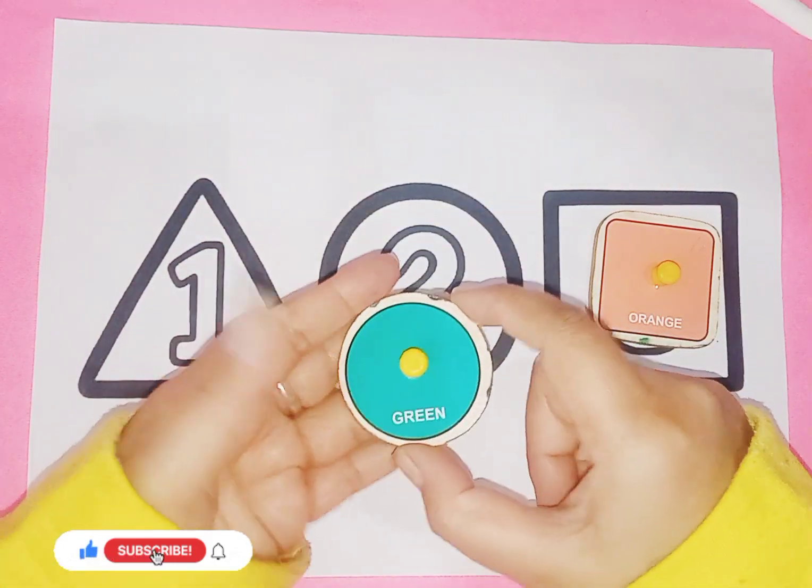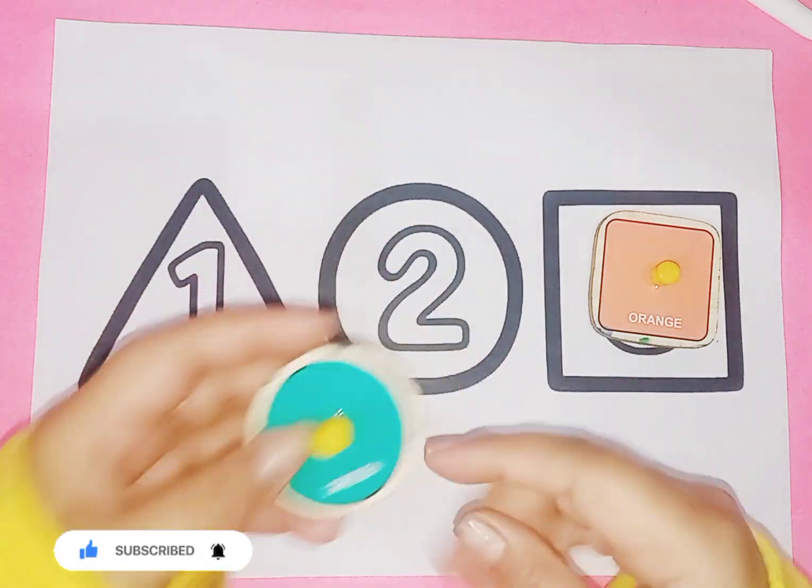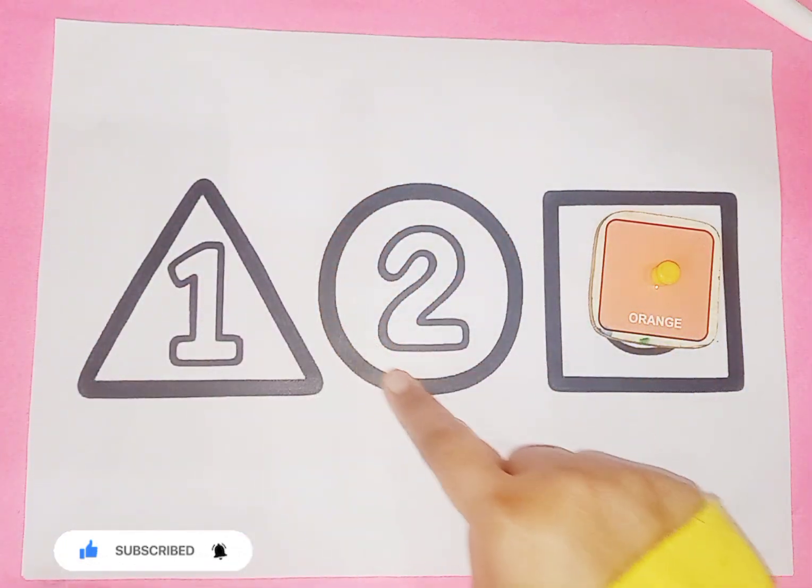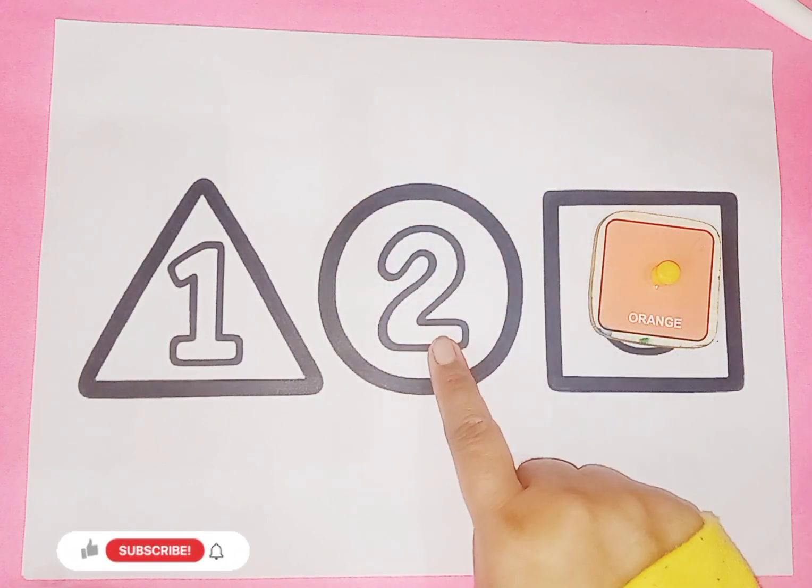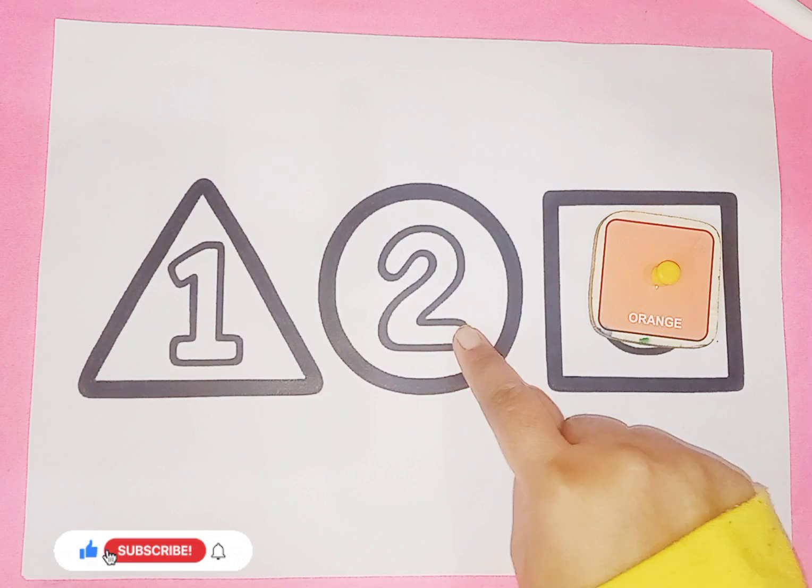This is circle. Round, round, circle. Circle shape is like this, and number is 2. This is number 2.